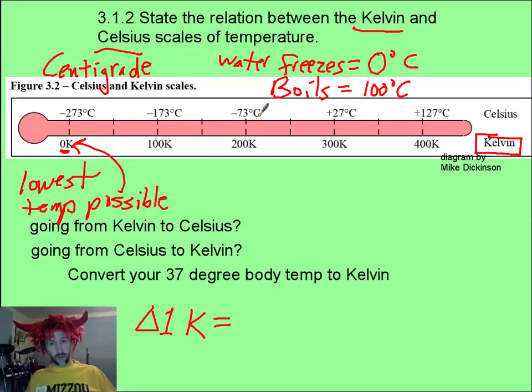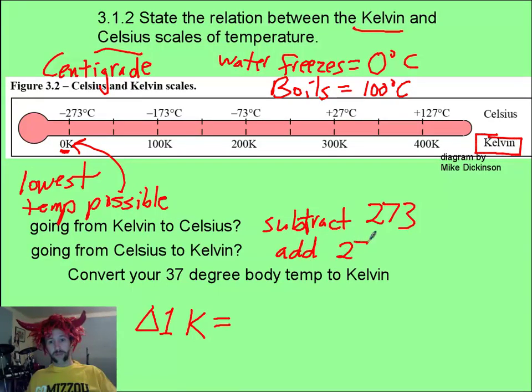Now, to convert, you can probably work it out from this scale. If you're going from Kelvin to Celsius, from zero up to negative 273, you just subtract 273. If you're going from Celsius up to Kelvin, you do the opposite. You add 273. With that in mind, pause it, see if you can answer this question.